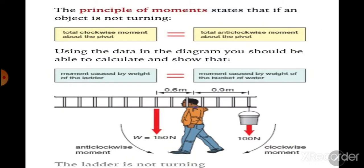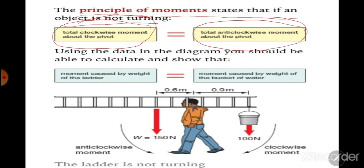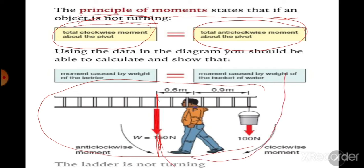Previously, we studied that the principle of moment states that if an object is not turning, the total clockwise moment and total anticlockwise moment will be equal. Here, if you can see this diagram, the weight of the ladder is acting here, so it produces an anticlockwise torque. This bucket will produce a clockwise torque. If they are equal, this ladder will not rotate. That we studied already.